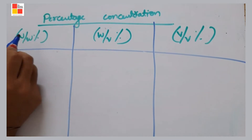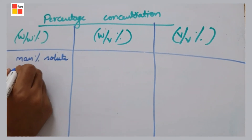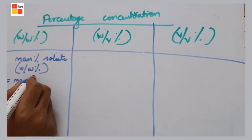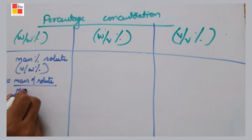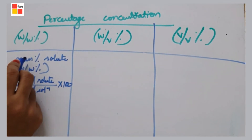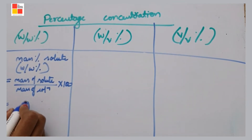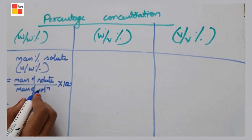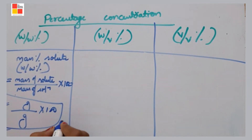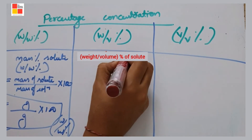This is the formula. Weight by weight percent represents the mass of solute divided by mass of solution, into 100. Mass of solute is in grams, mass of solution is also in grams, so we write this as weight by weight percent.